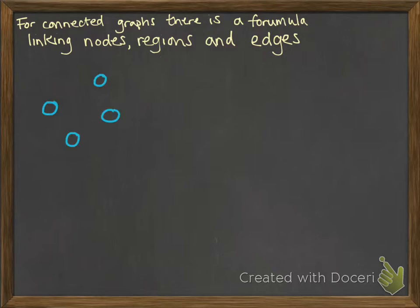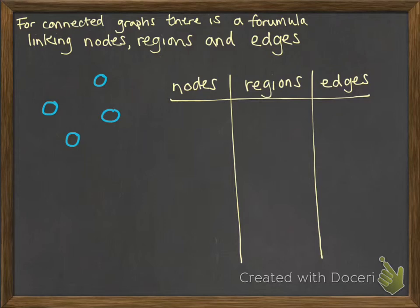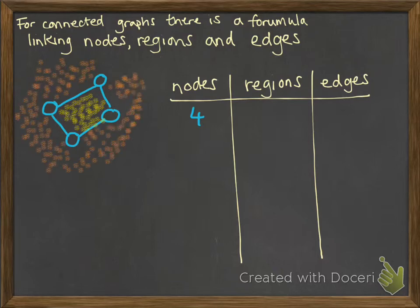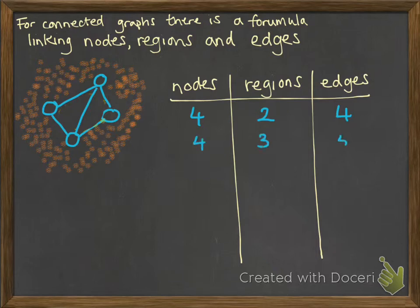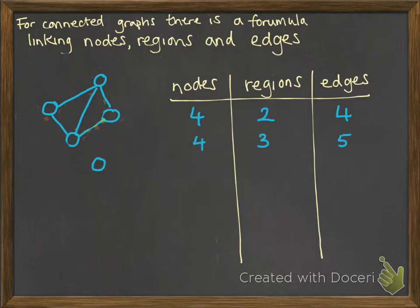If we start with some nodes for a graph, we're going to do a little table of results as we go along so we can try and see what's happening. This graph — starting very simply — has four nodes. The regions include any enclosed region and the region outside the graph, so this has two regions, and of course we've got four edges. Now if we add in another edge, we've still got four nodes, three regions now, and five edges.